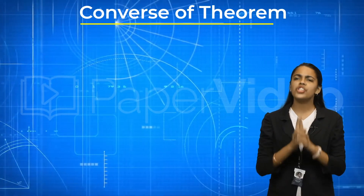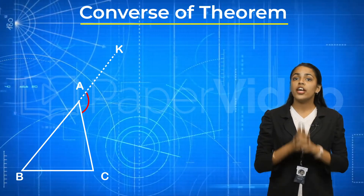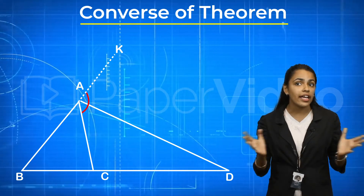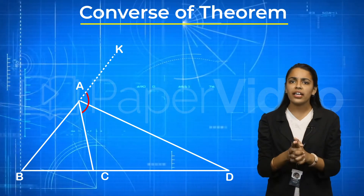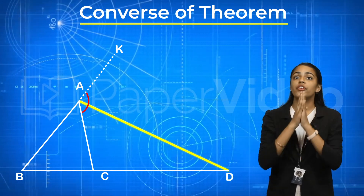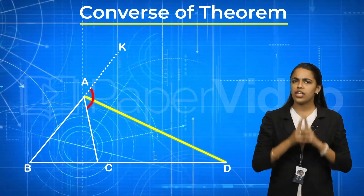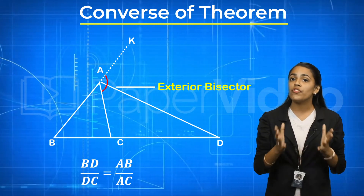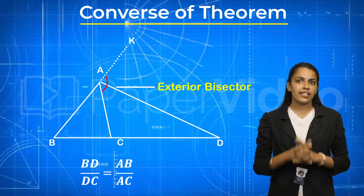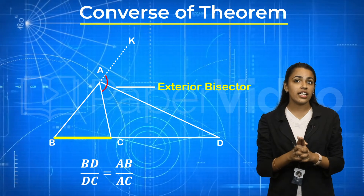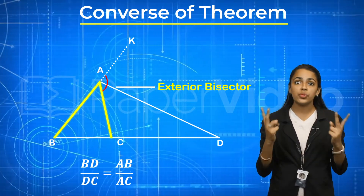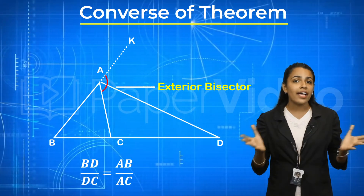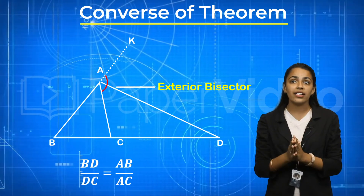The converse of the theorem is just opposite of it. According to the converse, if a line through one vertex of a triangle divides the opposite side externally in the ratio of the other two sides, then the line bisects the exterior angle at the vertex. This means that if AD is the line from vertex A outside triangle ABC such that BD upon DC equals AB upon AC, then AD is the bisector of exterior angle A of triangle ABC. That is, if AD bisects side BC externally in the ratio equal to the ratio of these two sides, then AD is the bisector of exterior angle A of the triangle. This is known as the converse of the theorem of external bisector angle of a triangle.